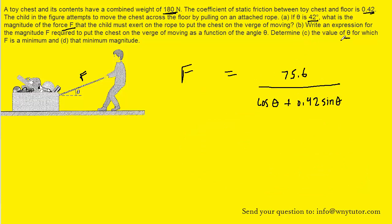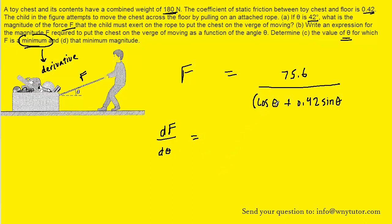On to part c, which asks us to determine the value of the angle for which this pulling force is a minimum. The fact that the question says a minimum means that we're going to have to compute the derivative of our equation — that would be true also if it had said a maximum value. So whenever you see minimum or maximum in an advanced physics problem, we're going to have to compute the derivative. We have F as a function of theta, so our derivative could be expressed as dF/d theta. We could apply the quotient rule to calculating this derivative.